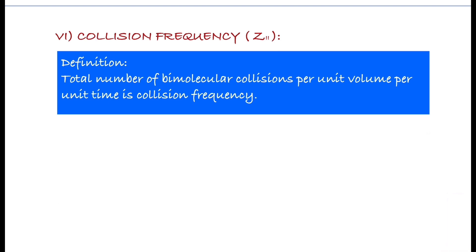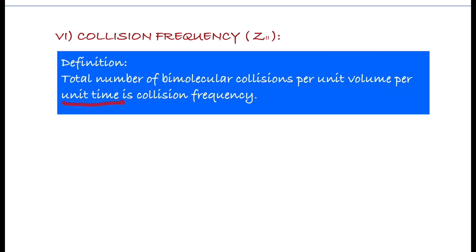Another collision parameter is collision frequency, represented by Z11. Z11 means both molecules are of the same category. If two molecules of different gases are used, we say Z12. Collision frequency Z11 is the total number of bimolecular collisions per unit time per unit volume.